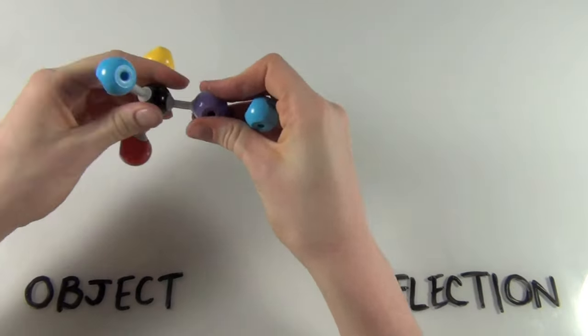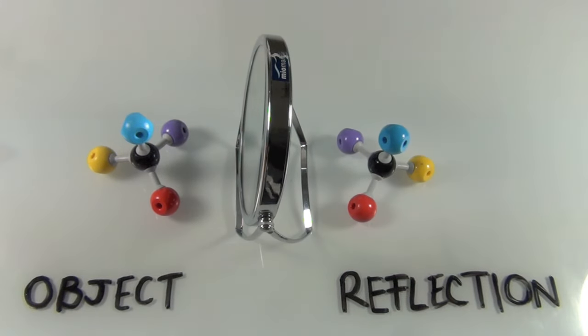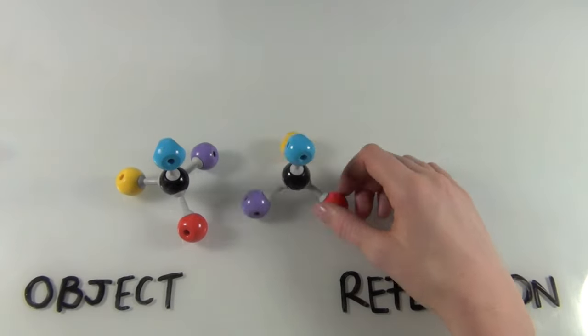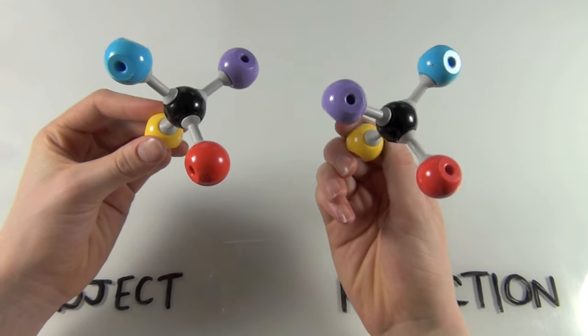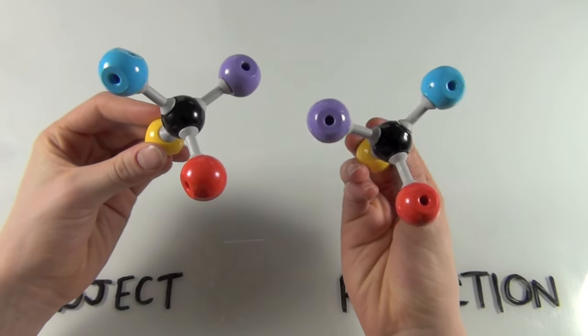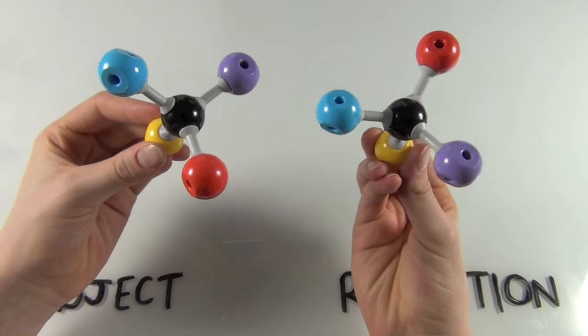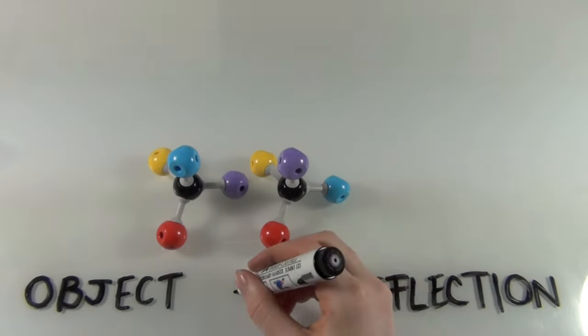So changing the final ball to purple, we have the object and its reflection. And what I'm trying to show you here is that there's no way that I can rotate the reflection of the object so that all the colours are in the same place. In other words, the object is not identical to its reflection.